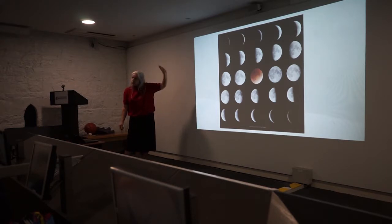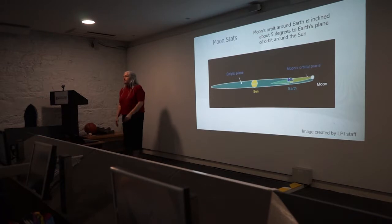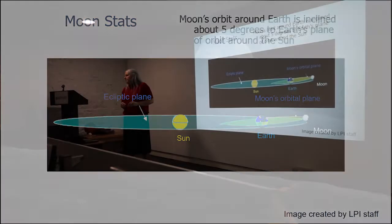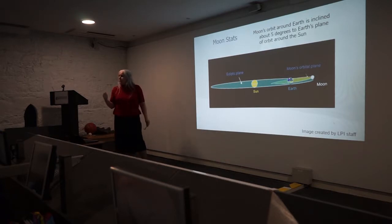Why do we see phases? The Earth is going around the sun in a big circle — the plane of the ecliptic. The moon is also orbiting us, but it does not line up exactly with the ecliptic. The moon is at a little bit of a tilt, roughly five degrees. Five degrees is very little, but it is sufficient to explain why we don't get eclipses every month.